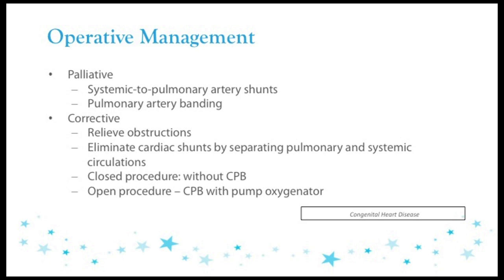One way to look at congenital heart surgery is to compartmentalize it into the various forms. Remember that congenital heart disease starts in the womb, and it's all about holes in the heart, obstructions in the heart, various arteries being switched around, other chambers not being connected to the chambers that they're supposed to be connected to. It sometimes can be a nightmare for the diagnostician and the surgeon. However, there are ways of compartmentalizing these diseases.